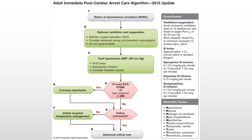For vasopressor infusion, the three options are epinephrine, dopamine, and norepinephrine, prescribed by the provider. Epinephrine and dopamine not only increase blood pressure but also increase heart rate. So if the patient is hypotensive and bradycardic, they may choose epinephrine or dopamine. If the patient is hypotensive and tachycardic, they would choose norepinephrine because it has more of an effect on blood pressure than on heart rate.